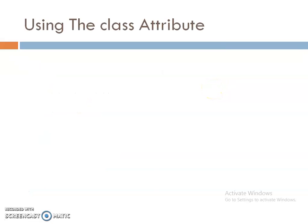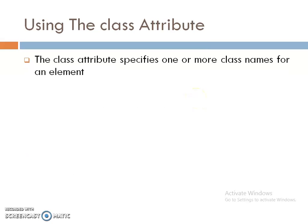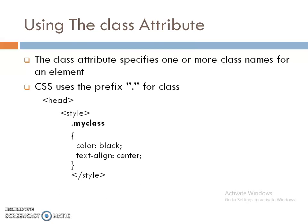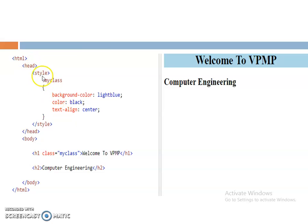Now the class attribute. It is very similar to the id attribute and specifies one or more class names for an element. For creating a class, we use a dot prefix. Within the head tag, we create a stylesheet in which we define the class name using a dot prefix — for example, my class name is 'my class'. Here we apply a number of formatting properties. In the body section, to apply the class to an element such as 'Welcome to VPMP', we use class is equal to the name of the class. So all the properties of my class will be applied to that statement.